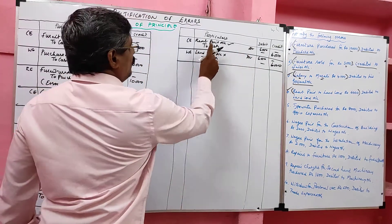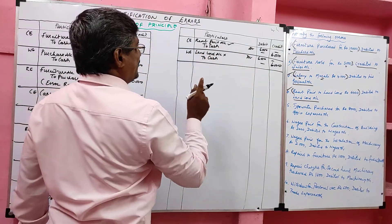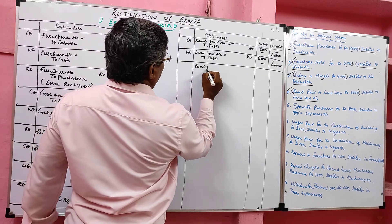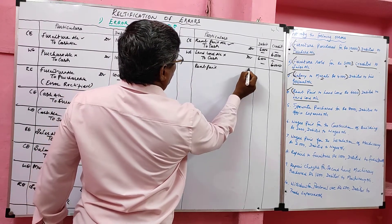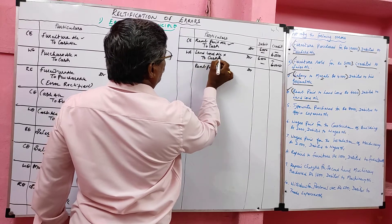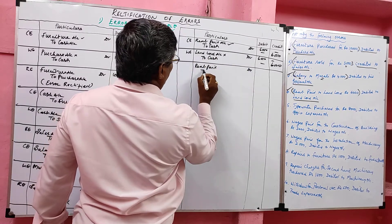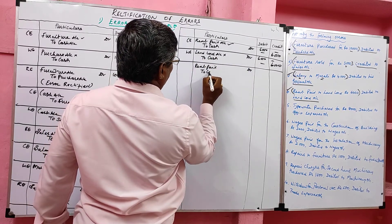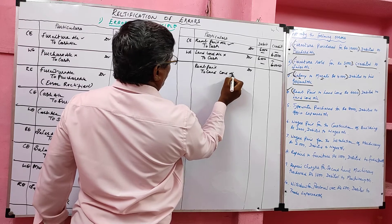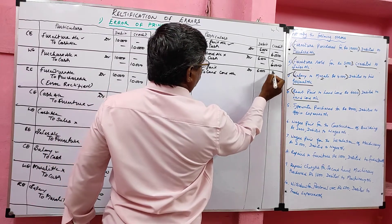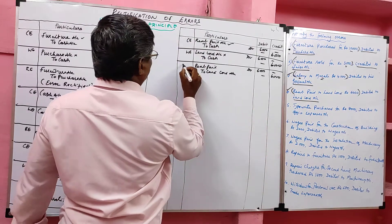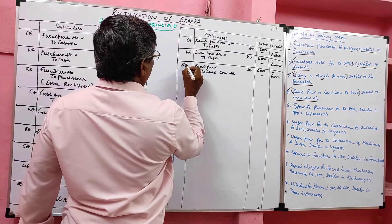Rent paid is the correct one; landlord is the wrong one. So the correct one should be posted as usual. Rectified entry: rent paid account debit — the landlord was on the debit side, so for cancellation it goes to the credit side — to landlord account, value 6,000. Narration: rectified entry.